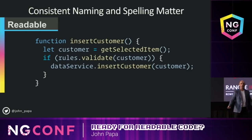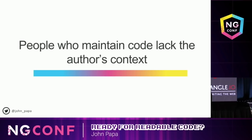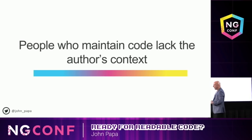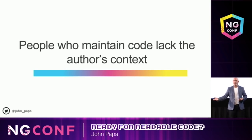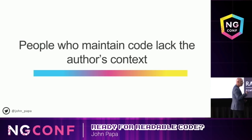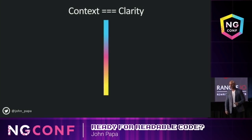Maybe rewrite it something like this — readable code. People who maintain the code also lack the author's context. Have you ever seen someone's code and it's clear to them but not to you? It's because sometimes the person who wrote it had the curse of knowledge — they knew some key piece of information that dictated how they wrote that code.